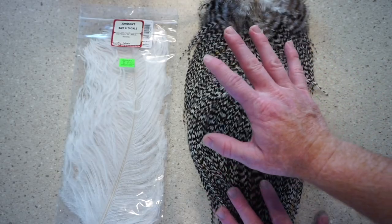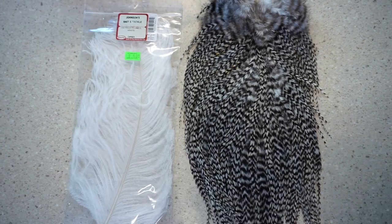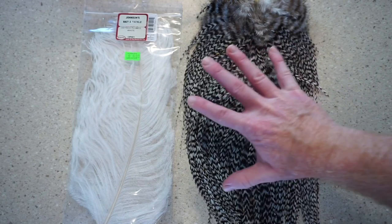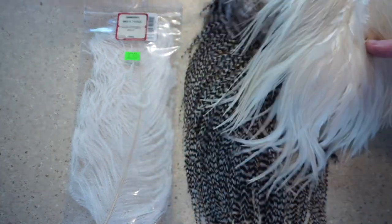With this fly, we're going to be using a saddle hackle, and I'm also going to be using ostrich plume. Now instead of ostrich plume, you could use just a white saddle hackle, or you could just only go with the grizzly here, but I like the contrast between the white and the grizzly.